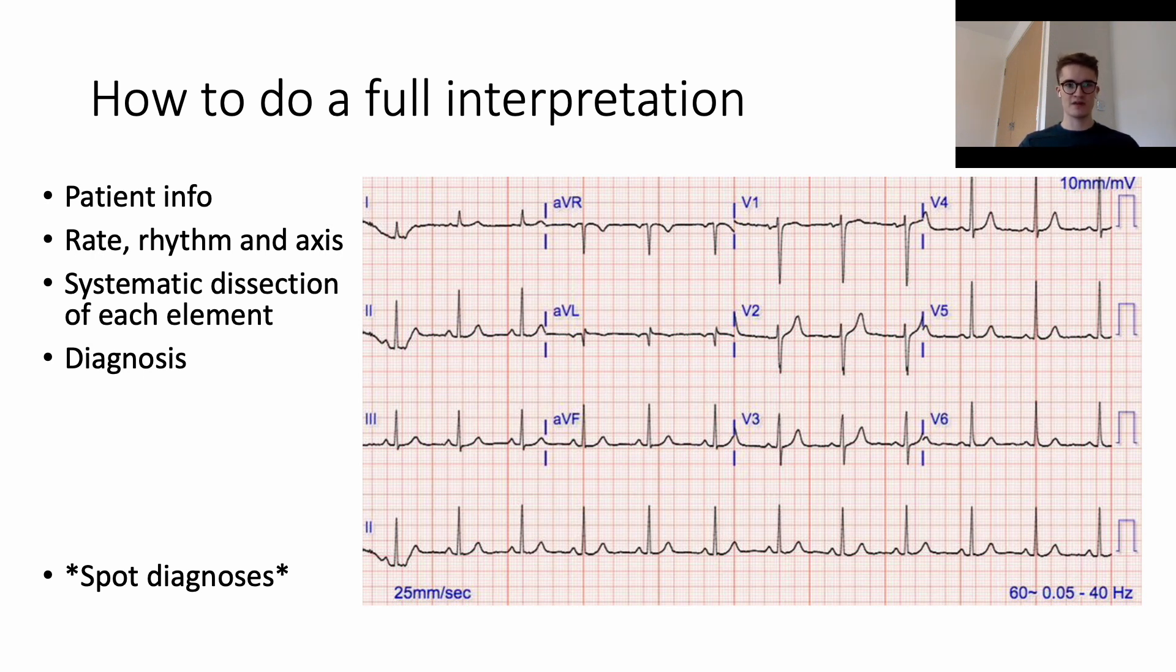The next section is rate, rhythm and axis. We'll be talking about how quickly the heart's beating, whether it's beating regularly or irregularly, and the axis refers to the major direction of electrical spread in the heart.